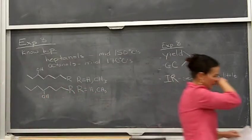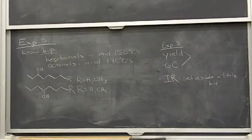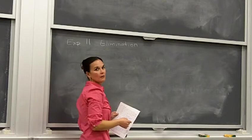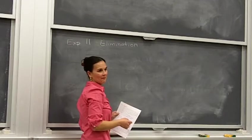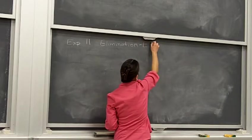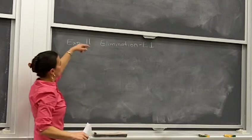Now, experiment 11: we're going to do an elimination reaction. This one involves an intermediate — so what type of elimination is this? This one's an E1. The dehydrohalogenation from a couple of weeks ago was an E2. This one's an E1 — we've got an intermediate in the middle.